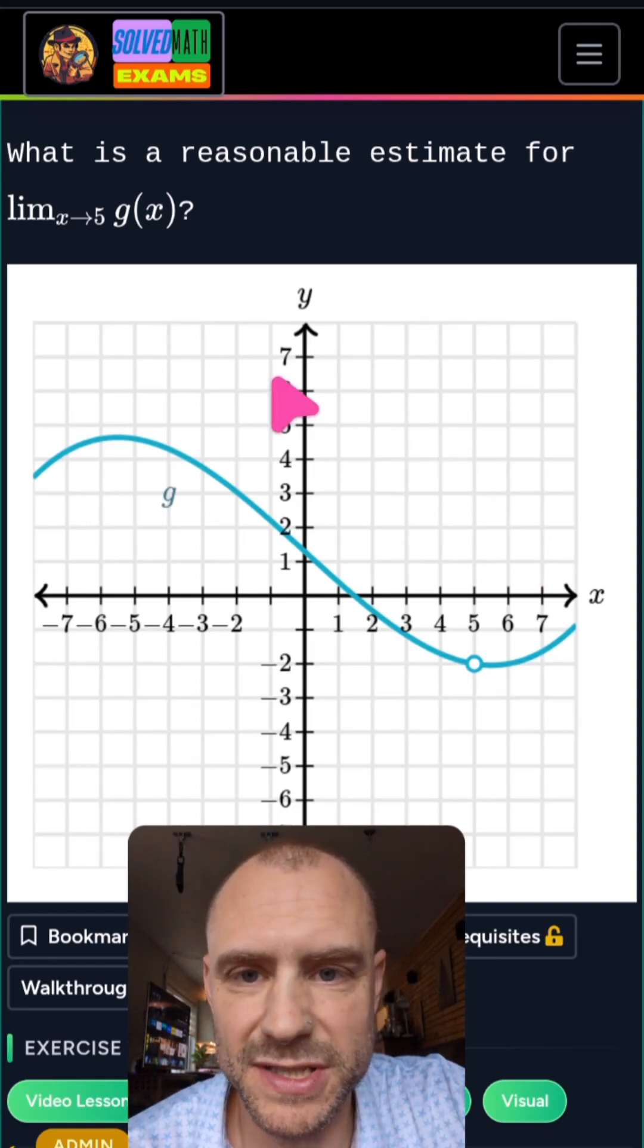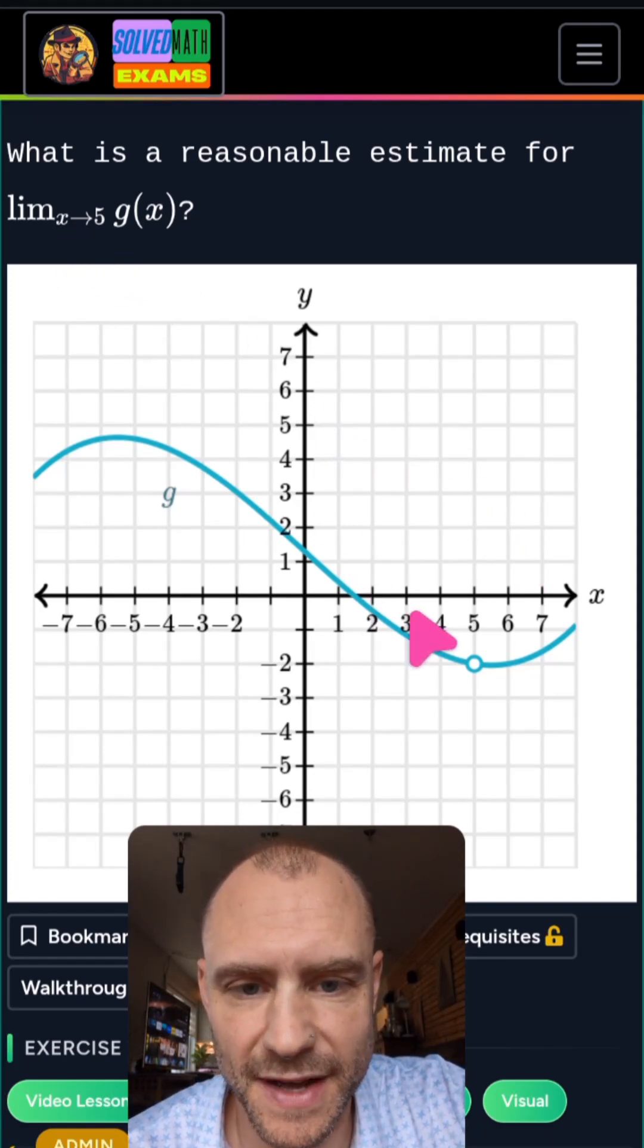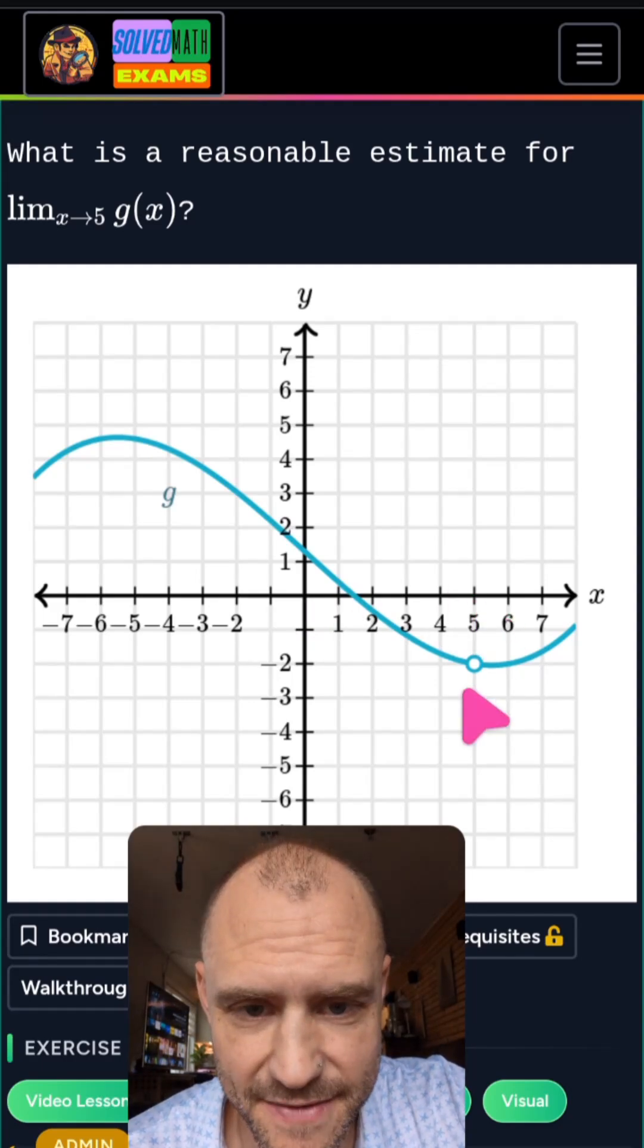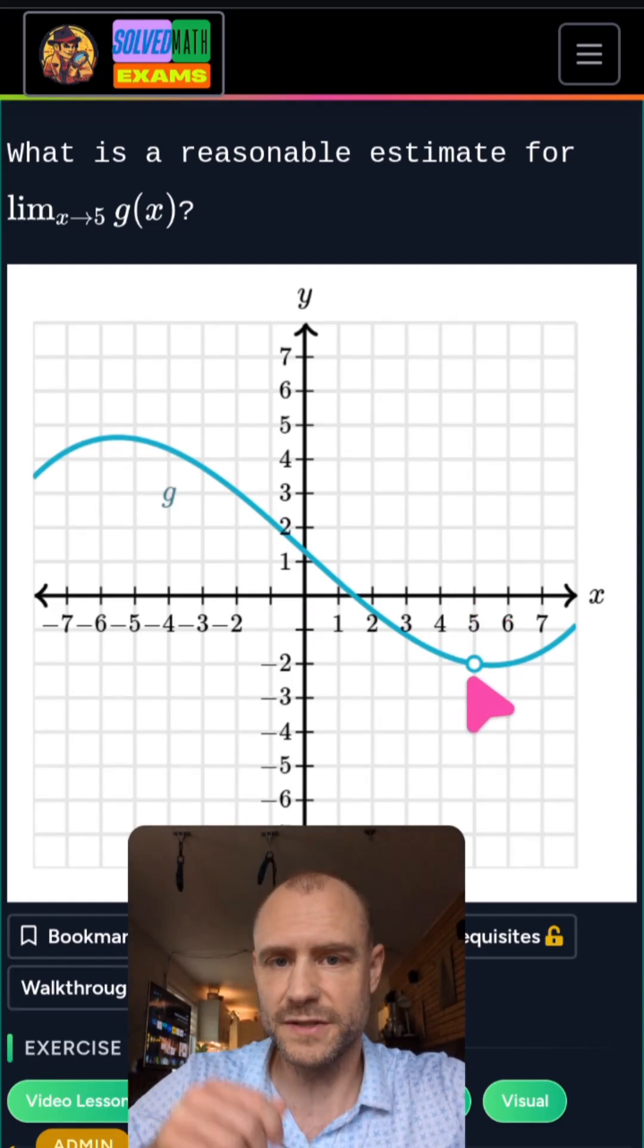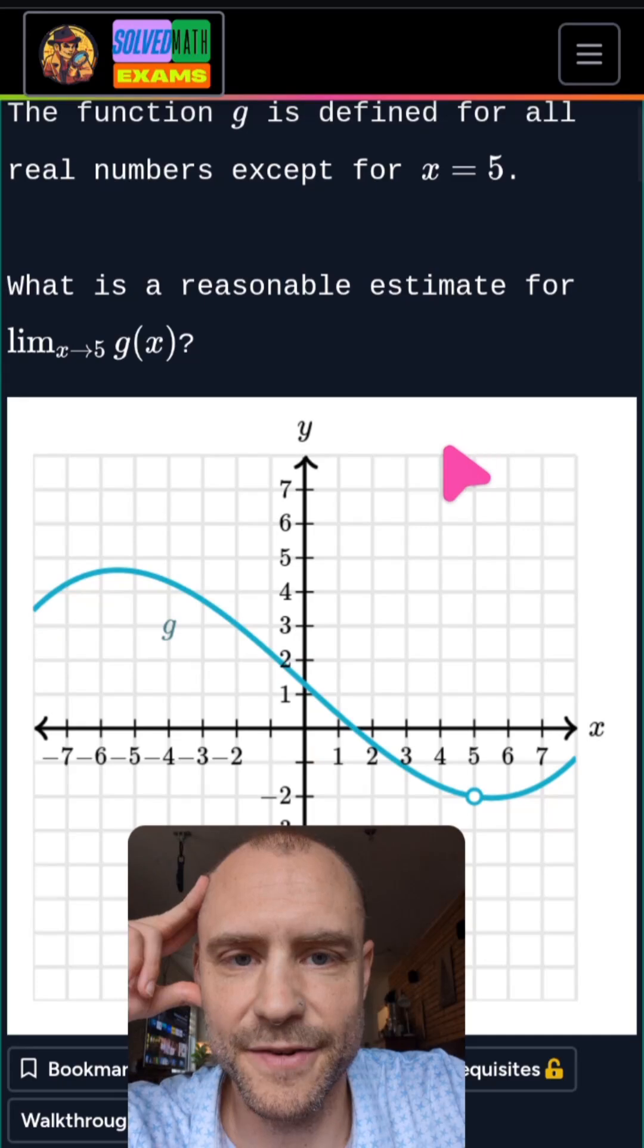So this question, if we look where x approaches 5, here's 5, here's on the x-axis. So as we approach 5, we have a bit of a problem. It's that the function is not defined for x is equal to 5.